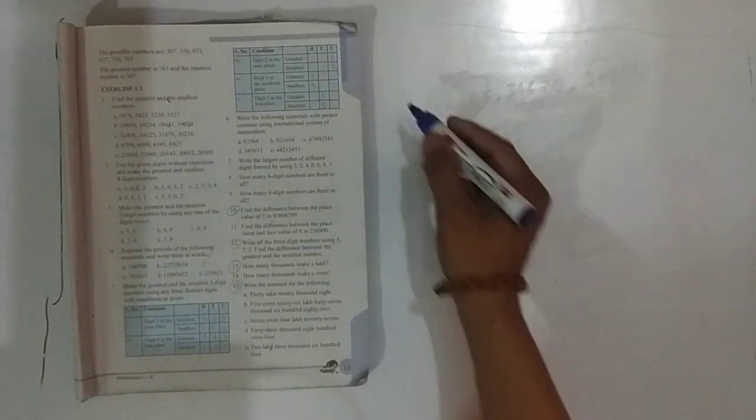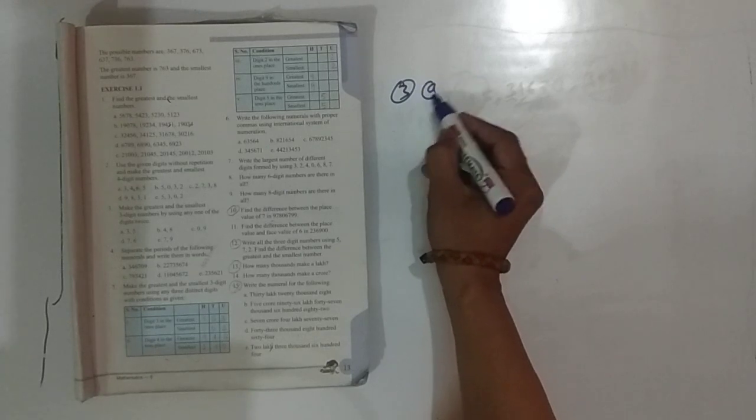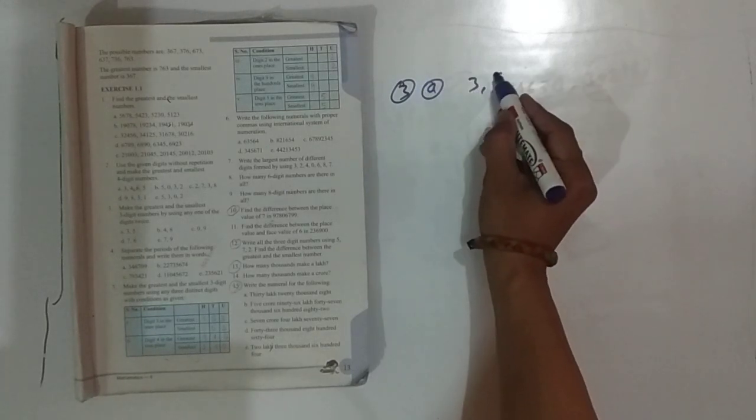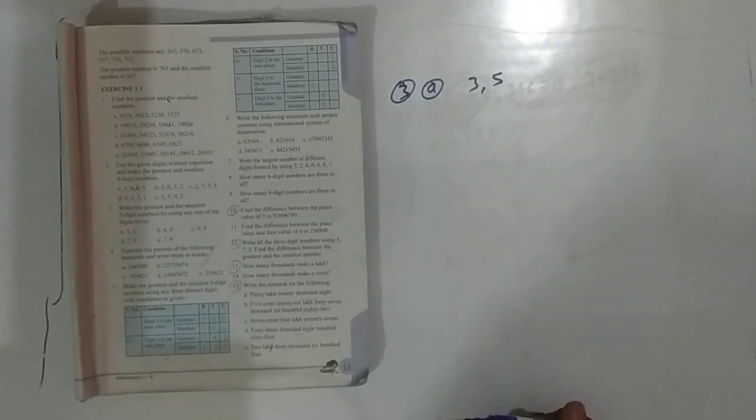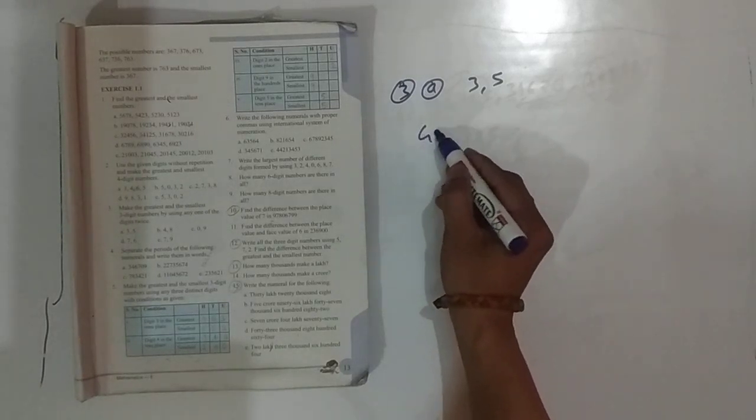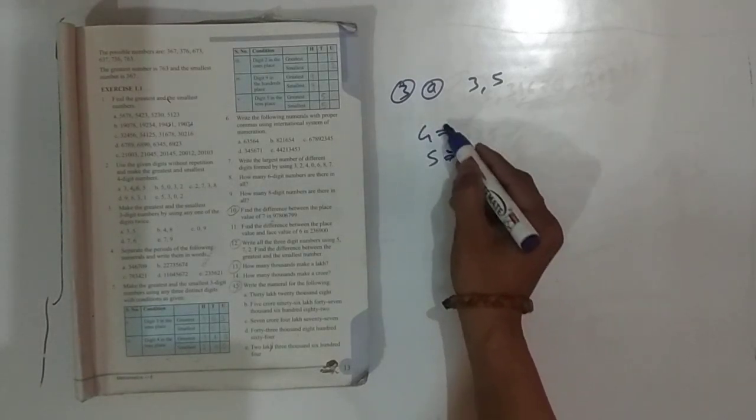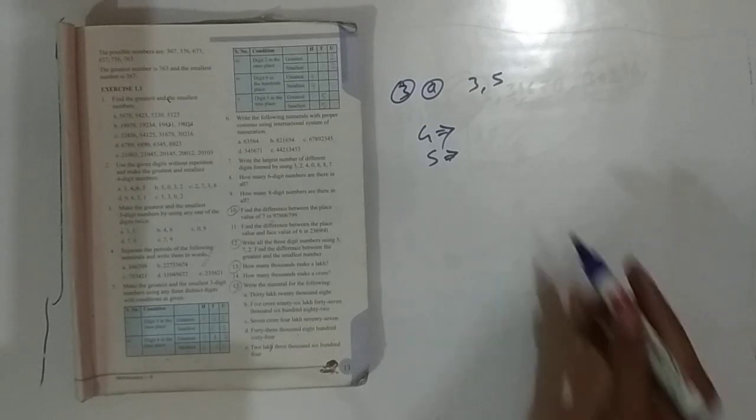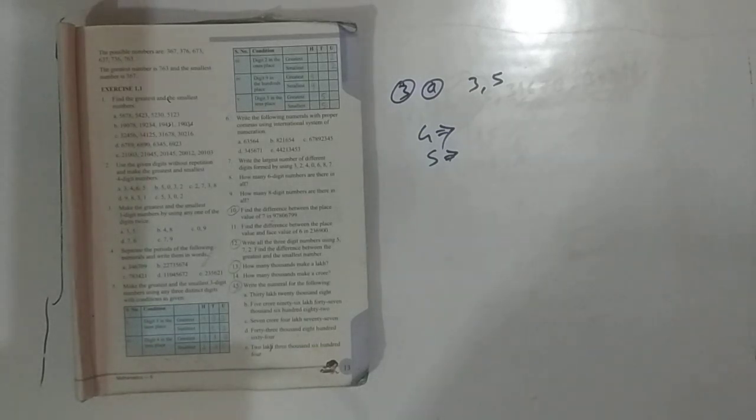Question number 3: Make the greatest and smallest 3-digit number by using any one of the digits twice. We have given 3 and 5. So you have these 2 digits, 3 and 5, and you will have to make 3-digit numbers.